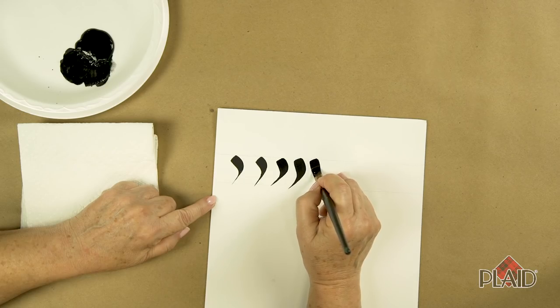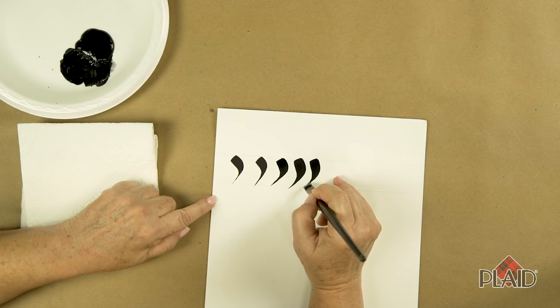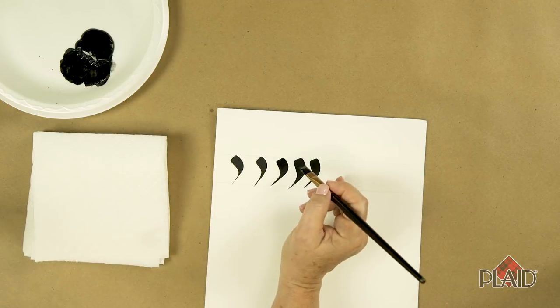Touch, apply pressure, pull, lift and drag. And that creates a comma stroke to the left.